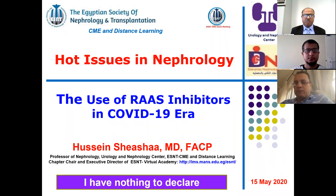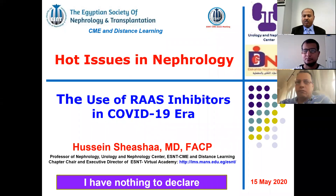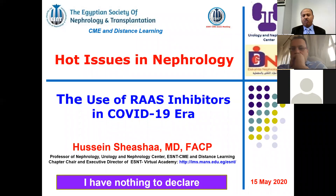It is my pleasure today to speak about one of the very important hot issues in nephrology: the use of RAS inhibitors in the COVID-19 era. This title has stimulated me to review the axis of the renin-angiotensin system. At the end of this presentation, we will declare the agreed guidelines about whether to continue or discontinue RAS inhibitors — meaning angiotensin-converting enzyme inhibitors or angiotensin receptor blockers.